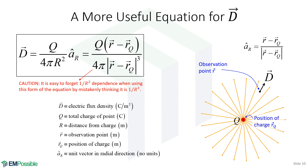This second form is much more useful for calculations because it isolates the vector. If we know the position of the charge — call it R sub Q — and we know the position of the observation point R, this lets us calculate R minus R_Q, that vector big R, divide by the magnitude, and get the unit vector A_R. We just subtract, get vector R, and have vector R divided by vector R cubed. You'll see when we work through examples that it makes things easier. If you prefer, feel free to use the first equation in your calculations.